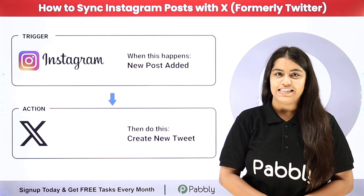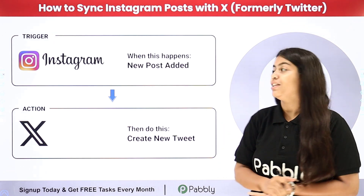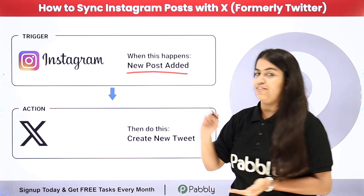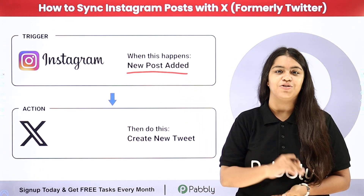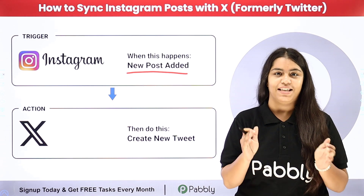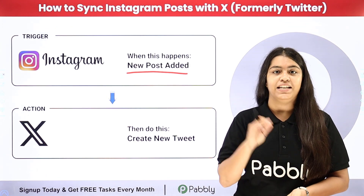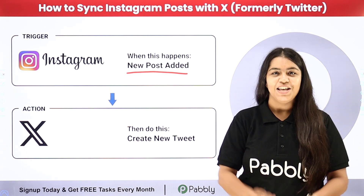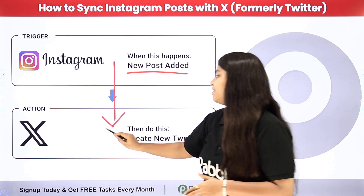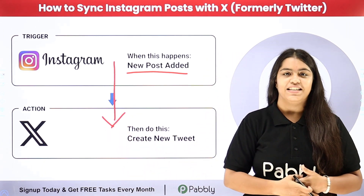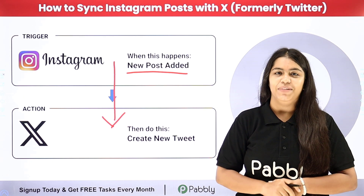I am managing social media accounts of a tech company. And now I want that as soon as I post something on my Instagram account, automatically with the help of the same post details, a new tweet should be created in my X, which is formerly Twitter. To do this, we are going to create a connection between Instagram and X.